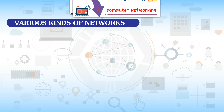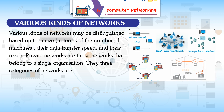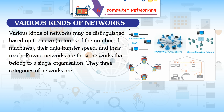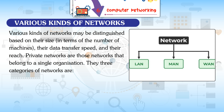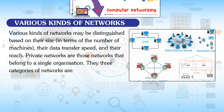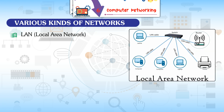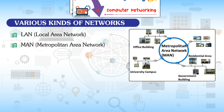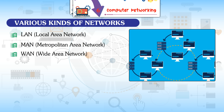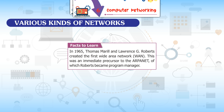Various kinds of networks may be distinguished based on their size in terms of number of machines, data transfer speed, and reach. Private networks belong to a single organization. The three categories are LAN (Local Area Network), MAN (Metropolitan Area Network), and WAN (Wide Area Network). In 1965, Thomas Merrill and Lawrence G. Roberts created the first wide area network (WAN), a precursor to the ARPANET, of which Roberts became program manager.